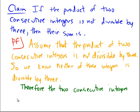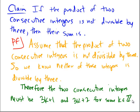Therefore, the two consecutive integers must be, let's say, 3k plus 1 and 3k plus 2 for some integer k, for some k in the integers. Because it can't be 3k, because that would be a multiple of 3.